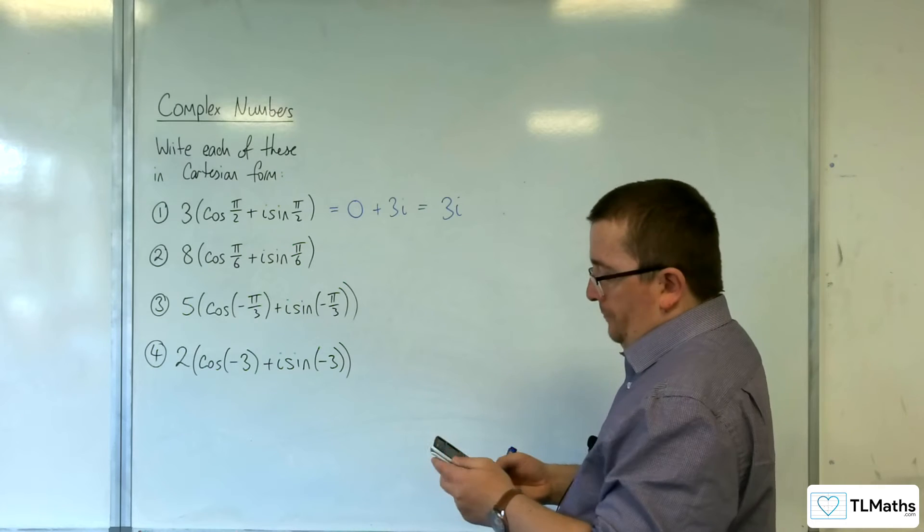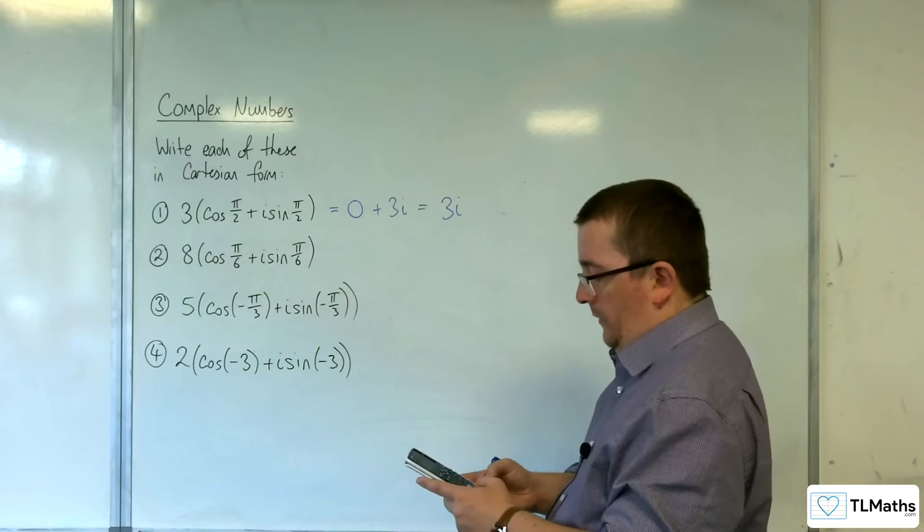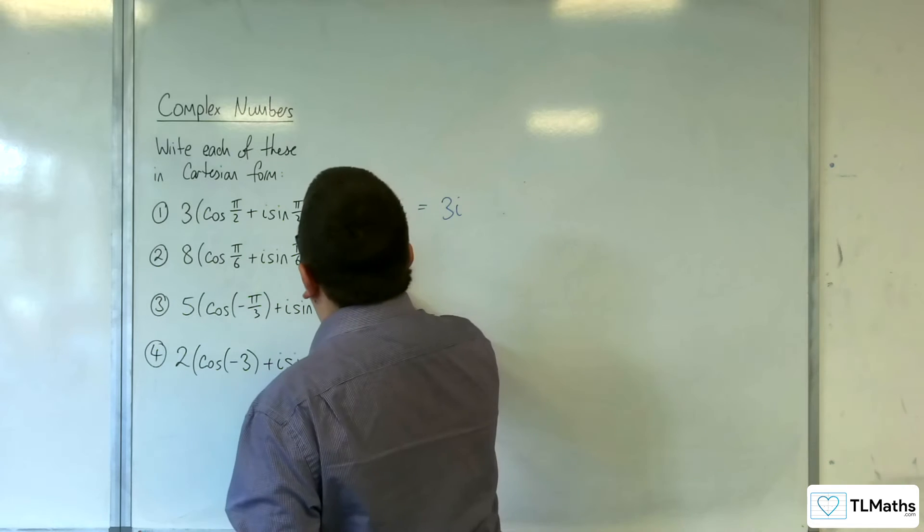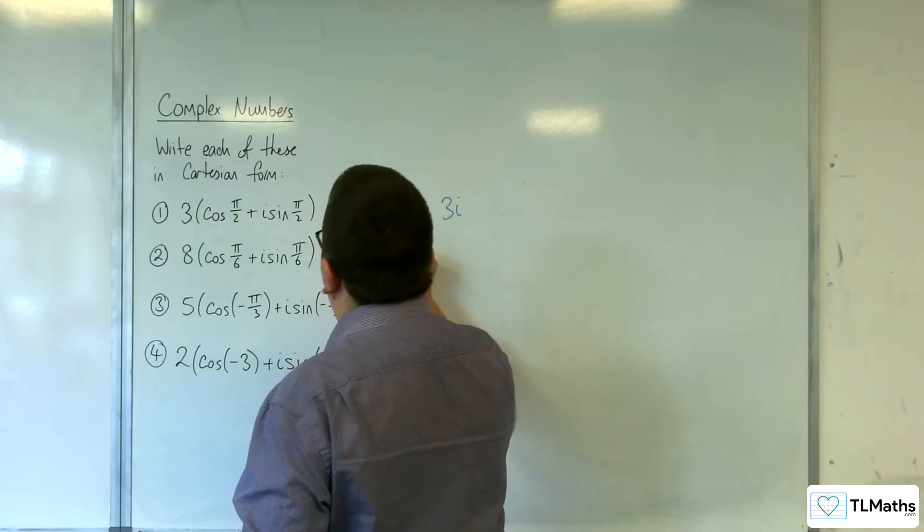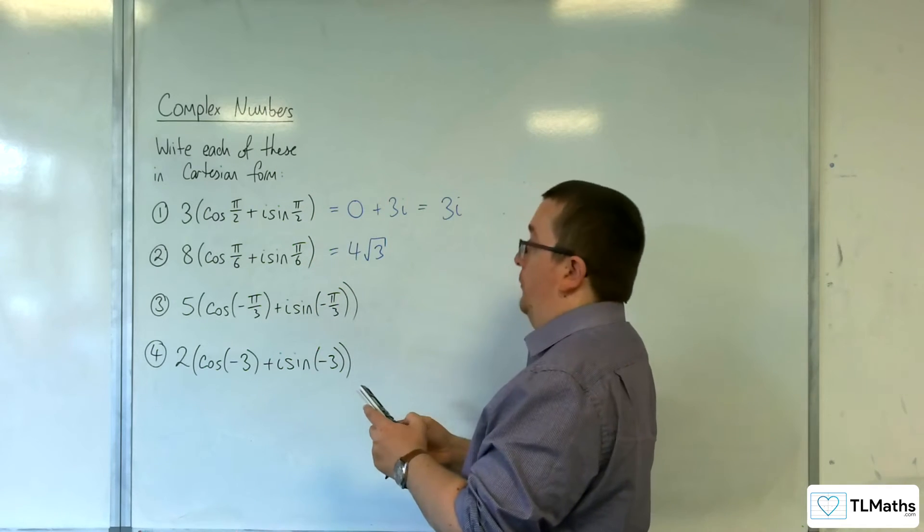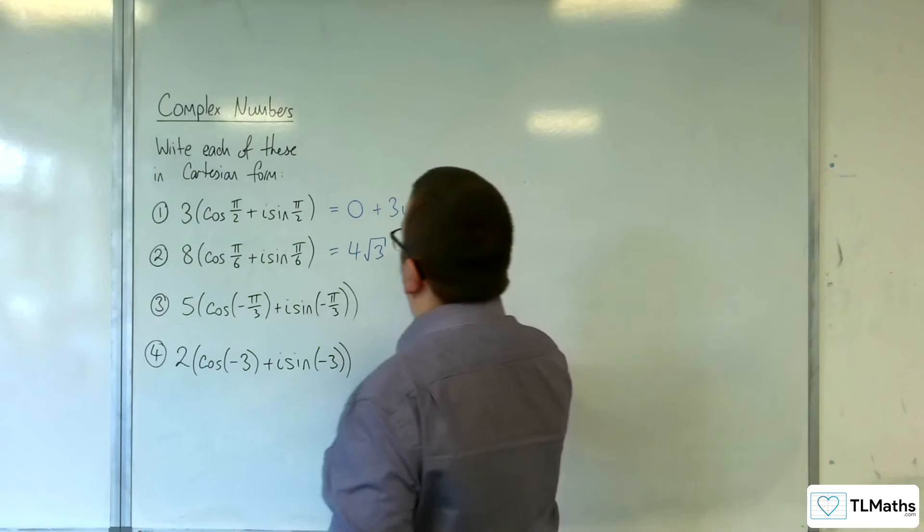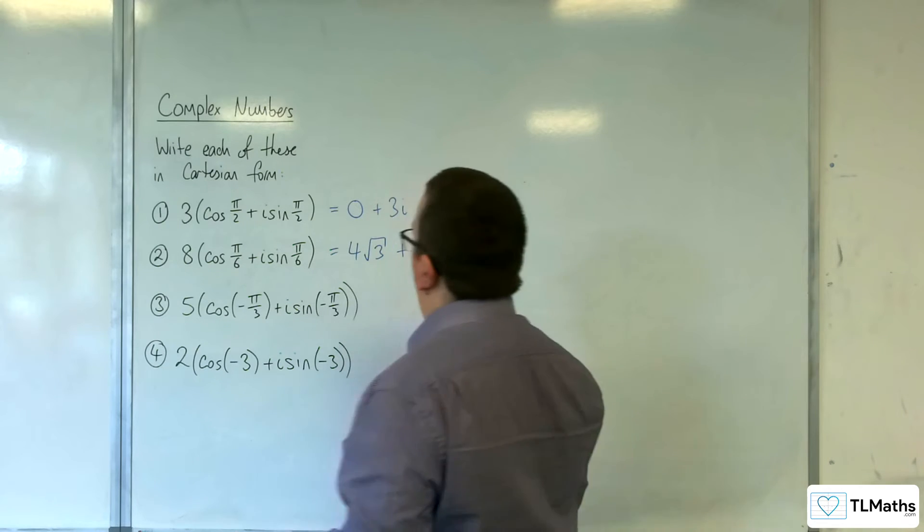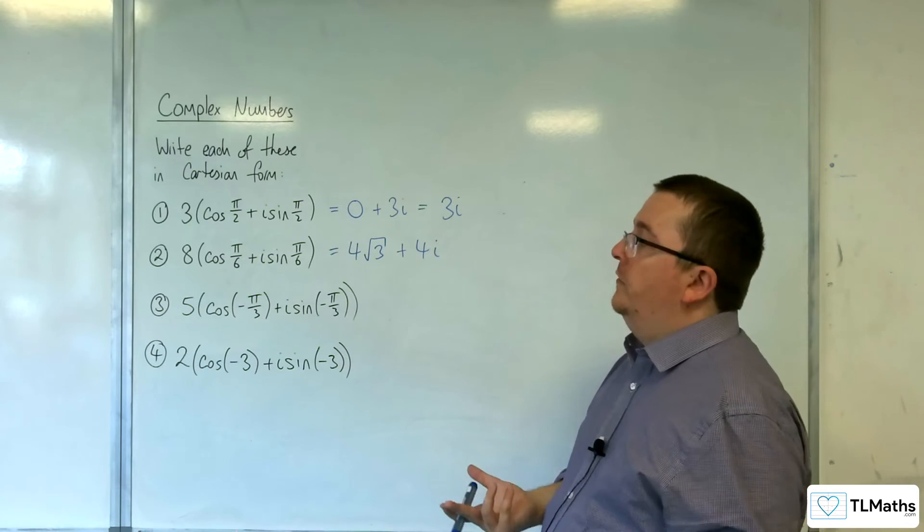The second one, 8 times cosine of pi over 6 is 4 root 3. And then 8 lots of sine of pi over 6 is 4. So we get 4 root 3 plus 4i for number 2.